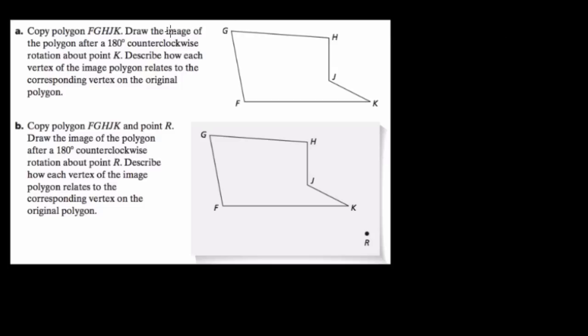Okay, so I'll read these problems in case you can't read them. In part A, it says copy polygon FGHJK, and that just means this shape right here, and they give us the letters just to help us follow the order. We have F to G to H to J to K, and then we close it as a polygon.